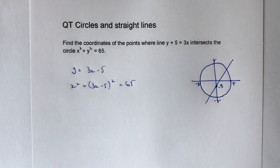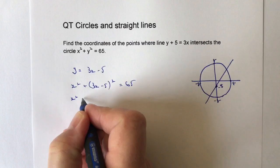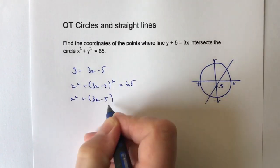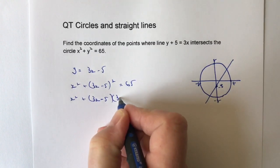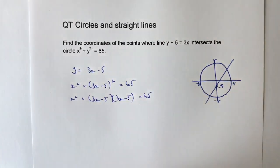And then really it's a case of expanding and solving for x. Now, it seems a little bit daunting at the moment, but it does actually work out really reasonably well with this calculation. So let's have a look then at expanding these two brackets here, because I've got 3x minus 5 multiplied by 3x minus 5, and that equals 65.